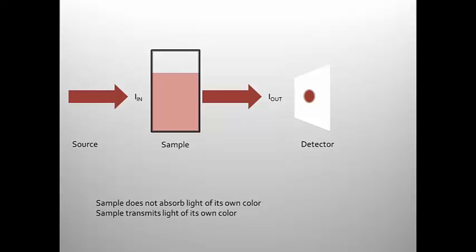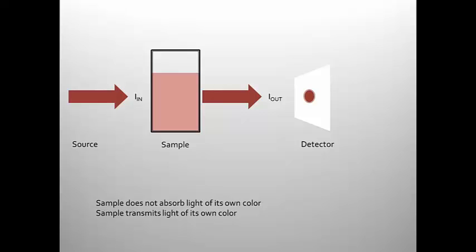When we added a sample, the red sample did not appear to absorb any of the red laser light. We can say from that that the sample transmits light of its own color. And when we moved to the green sample, we saw that the green sample absorbed quite a bit of light, and less light was transmitted.